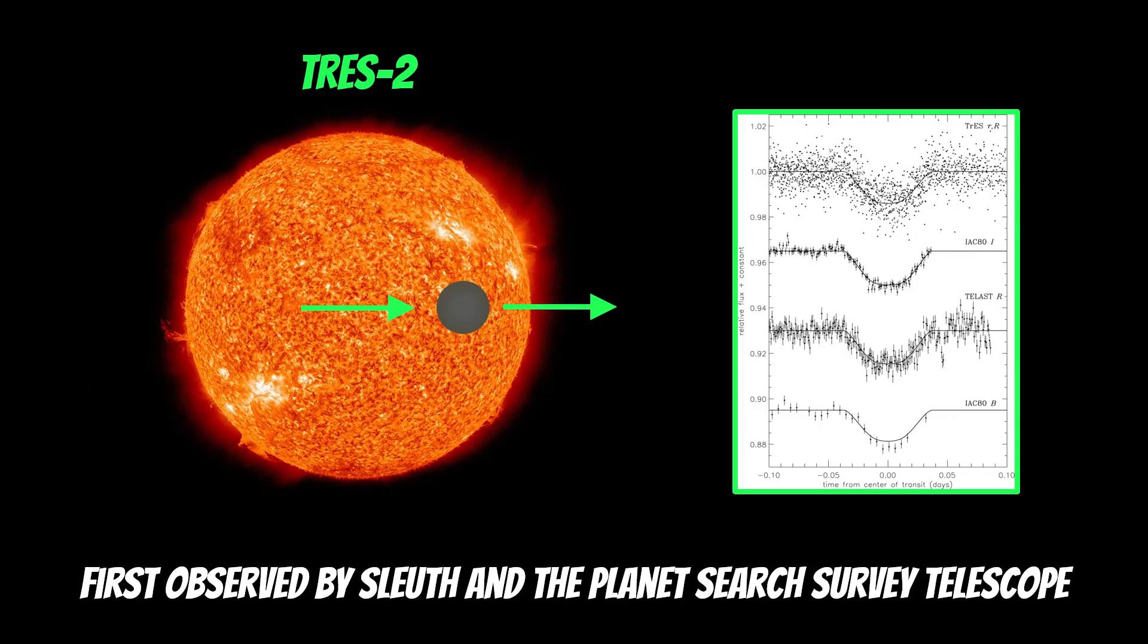How was it first detected? It was detected with the transit method, and it was first observed with SLEUTH and the Planet Search Survey Telescope. It blocked out some of the light from the star. On the right hand side, you can see that dip in brightness as it blocks out some of that light. That is various different telescopes and various different filters, in different colors essentially. They all give that characteristic dip in brightness as the planet passes in front.